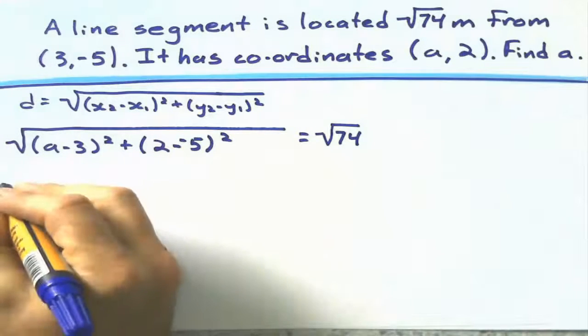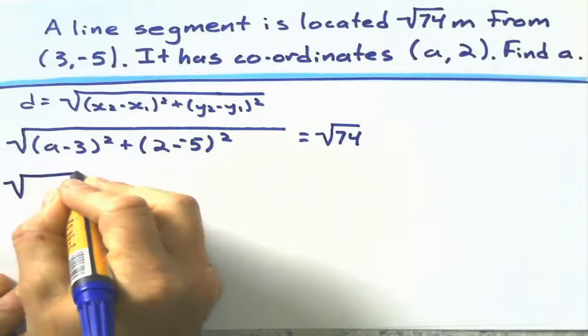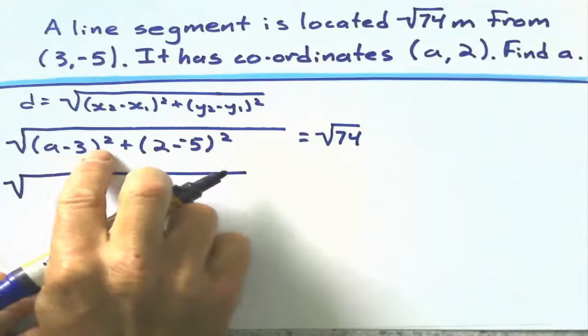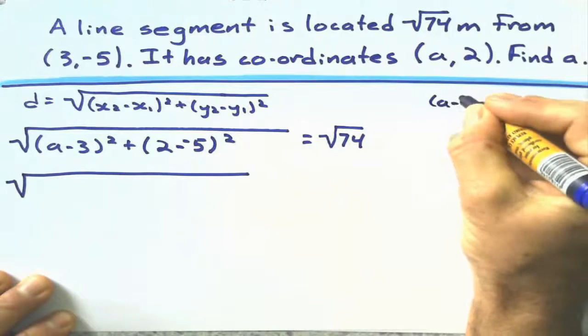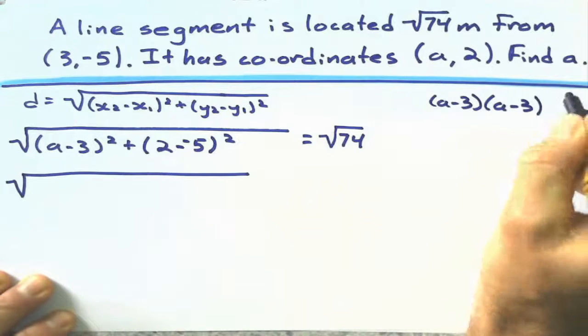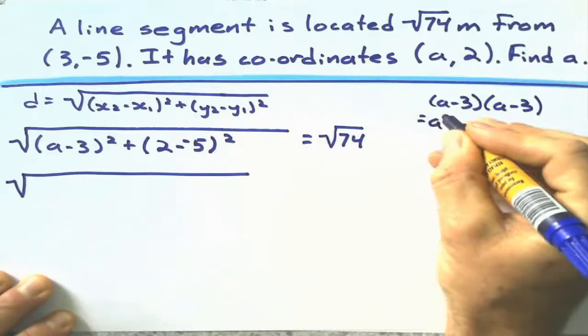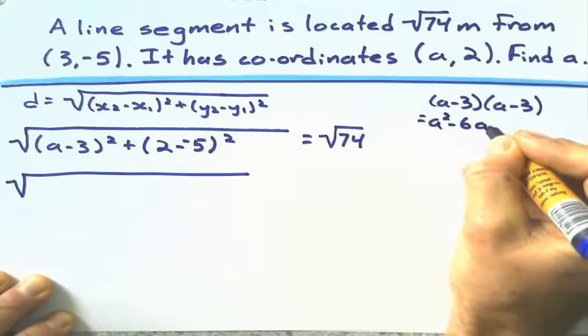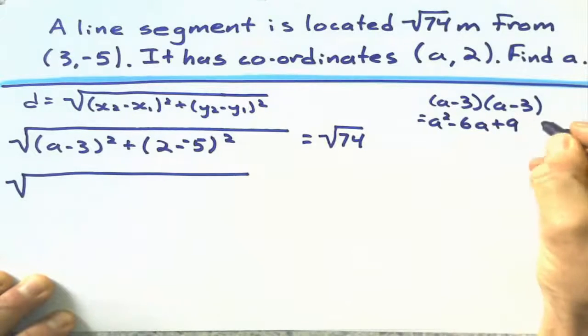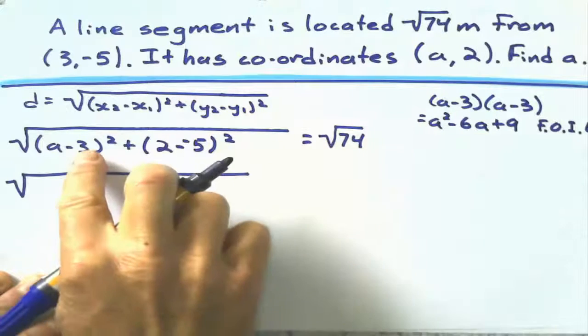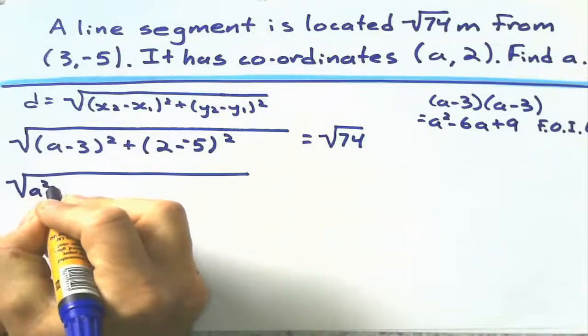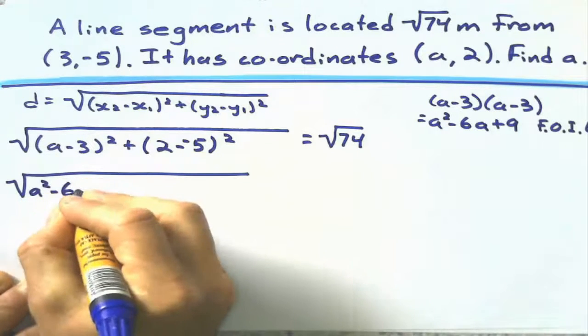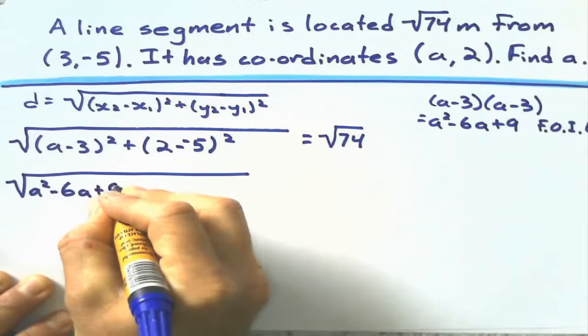a minus 3 squared. This is an expanding thing, isn't it? This is a minus 3 times a minus 3, which gives me a squared minus 6a plus 9. That's that FOIL thing. First, outside, inside, last. So, that's a trick right there, I guess.